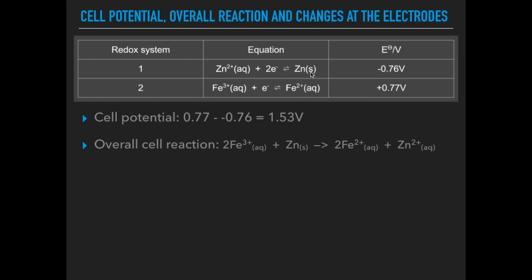And that means that the other one, the less positive one, must run in reverse. And to get the electrons to cancel in the overall equation, you can see we've only got one electron in the iron equation. But we've got two in the zinc so we're going to need to double everything in this.